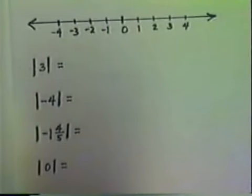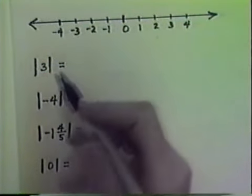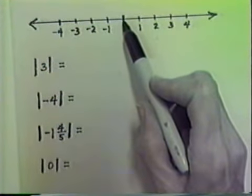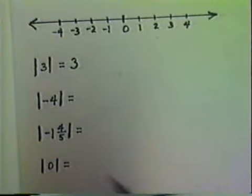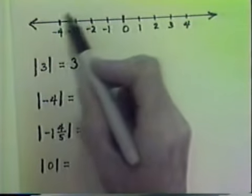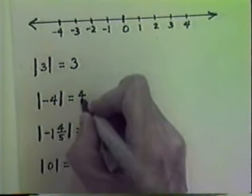Let's use a number line and find the absolute value of four examples. The symbol for absolute value is vertical bars on either side of the number. This asks you to find the absolute value of three. Here's zero, here's three — from zero to three is one, two, three spaces. The absolute value of three is three. The absolute value of negative four: here's zero, here's negative four — the distance from zero to negative four is one, two, three, four spaces. The absolute value of negative four is four.